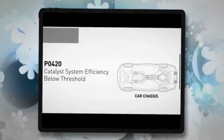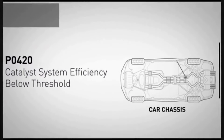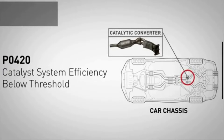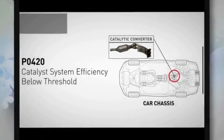The PO420 code indicates a low efficiency of your catalyst system. This trouble code is usually triggered due to issues with your vehicle's exhaust or fuel systems.